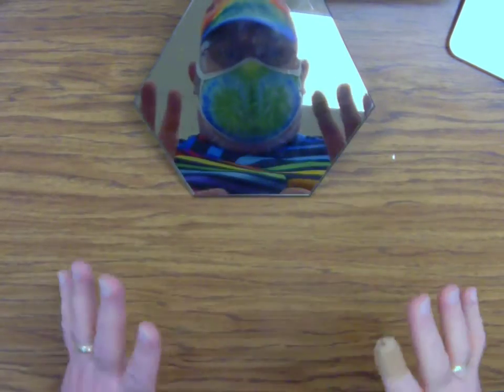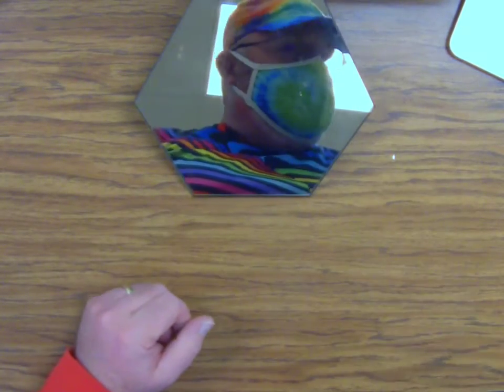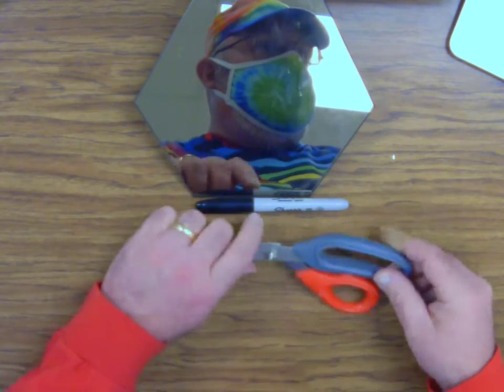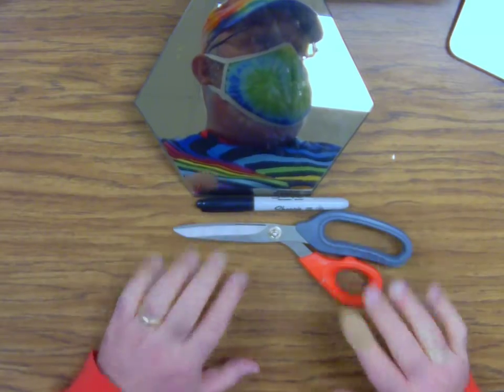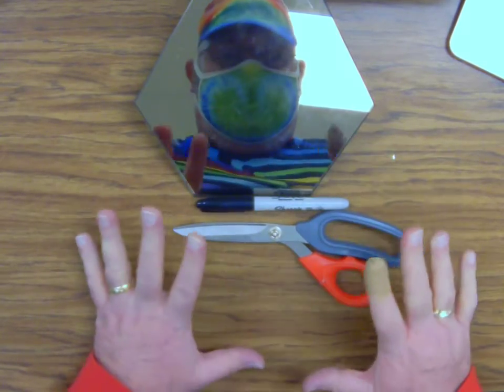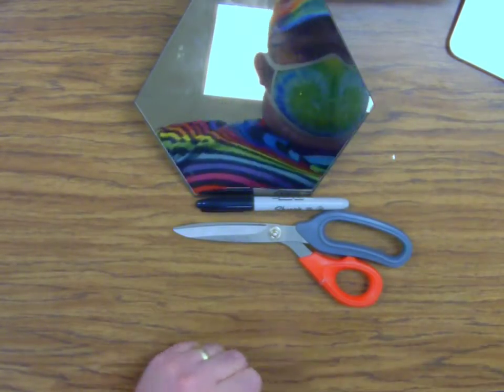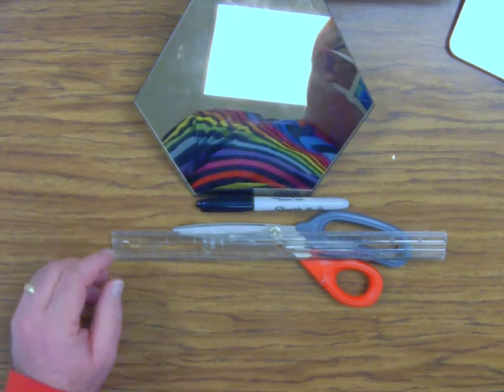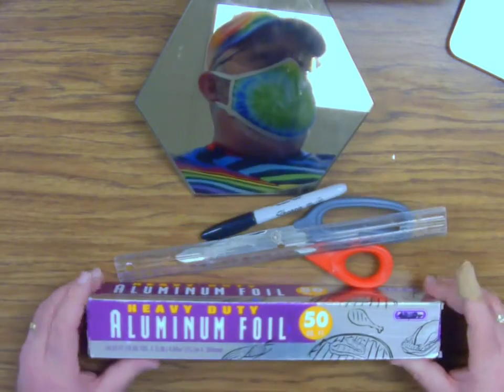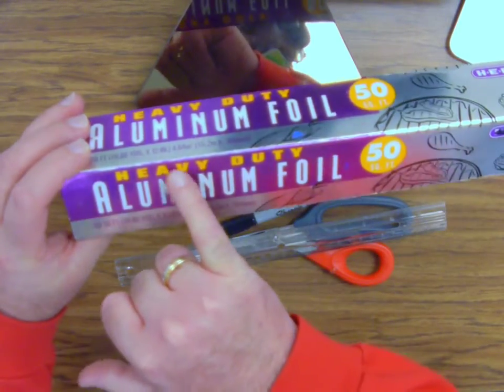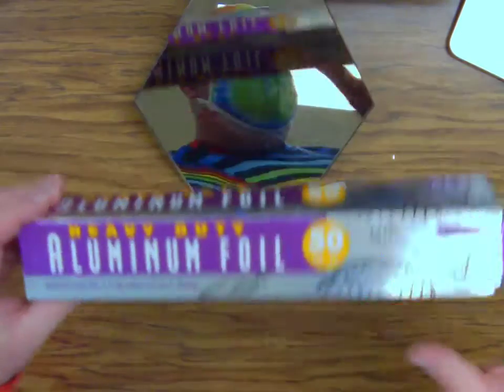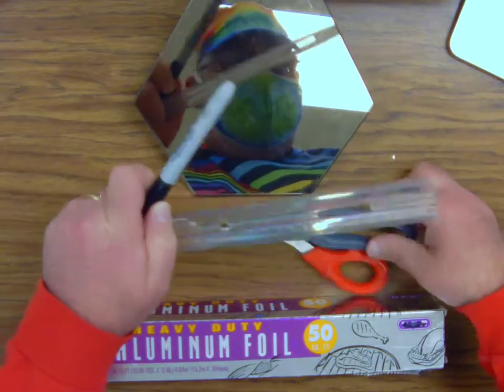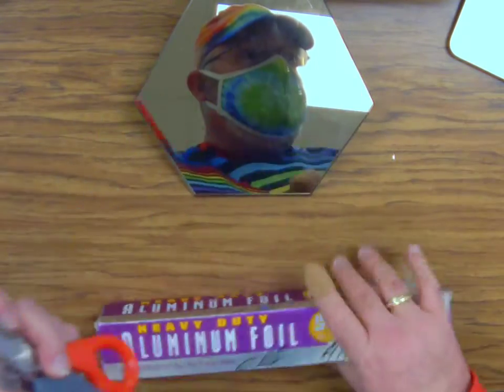So, our supplies that we will need. Are you ready? We're going to need a Sharpie. We're going to need a pair of scissors. Now, it can be any scissors. I just happen to have a really good pair of scissors here. And you will need a ruler. Okay, and you will need aluminum foil. And, as you'll notice, I got heavy duty aluminum foil. Okay, so again, Sharpie, ruler, scissors, aluminum foil.